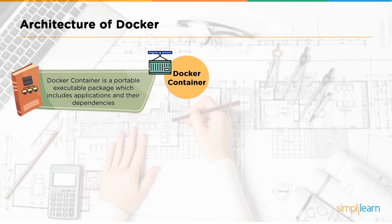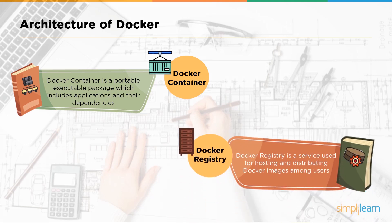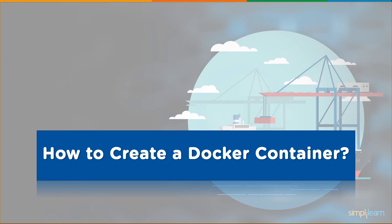Docker Compose is used for running multiple containers as a single service — each container runs in isolation but can interact with each other with no limitations. Docker Registry is a service used for hosting and distributing Docker images among users.